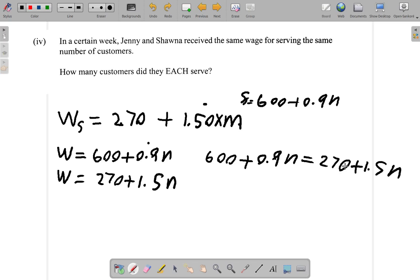I subtract 270 from both sides, so I get 600 minus 270 plus 0.9N equals... 270 minus itself from here. I don't really have a lot of space to show all of the steps, but you should show all of the steps when you're answering the question. 270 minus itself, that's gone, so that's 1.5N left.